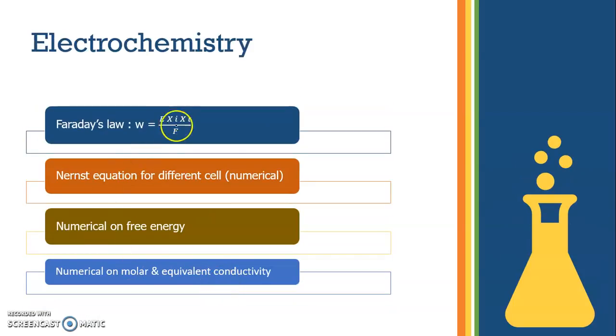Next chapter is electrochemistry. From electrochemistry, understand Faraday's law and practice numerical on Faraday's law. Nernst equation for different cells - numerical may come from this part. Numerical on free energy, numerical on molar and equivalent conductivity. Solve all these properly.